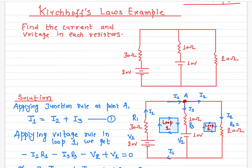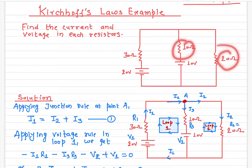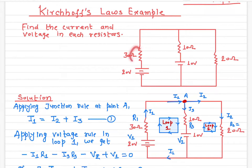In this video we'll talk about Kirchhoff's law and we're going to use Kirchhoff's law to find out the current in each resistor. We have three resistors here: 30 ohm, 10 ohm, and 20 ohm, and two potential sources or two batteries. We have to find out what are the currents in each resistor, and we can also solve for the potential drop across each resistor.